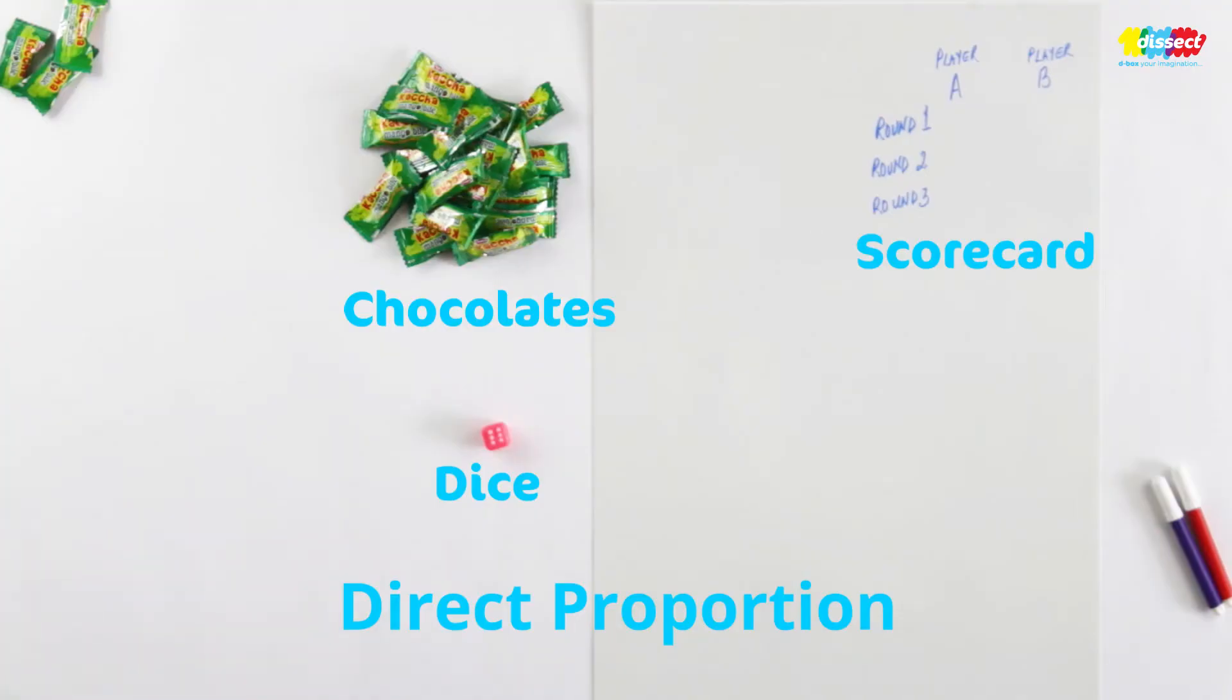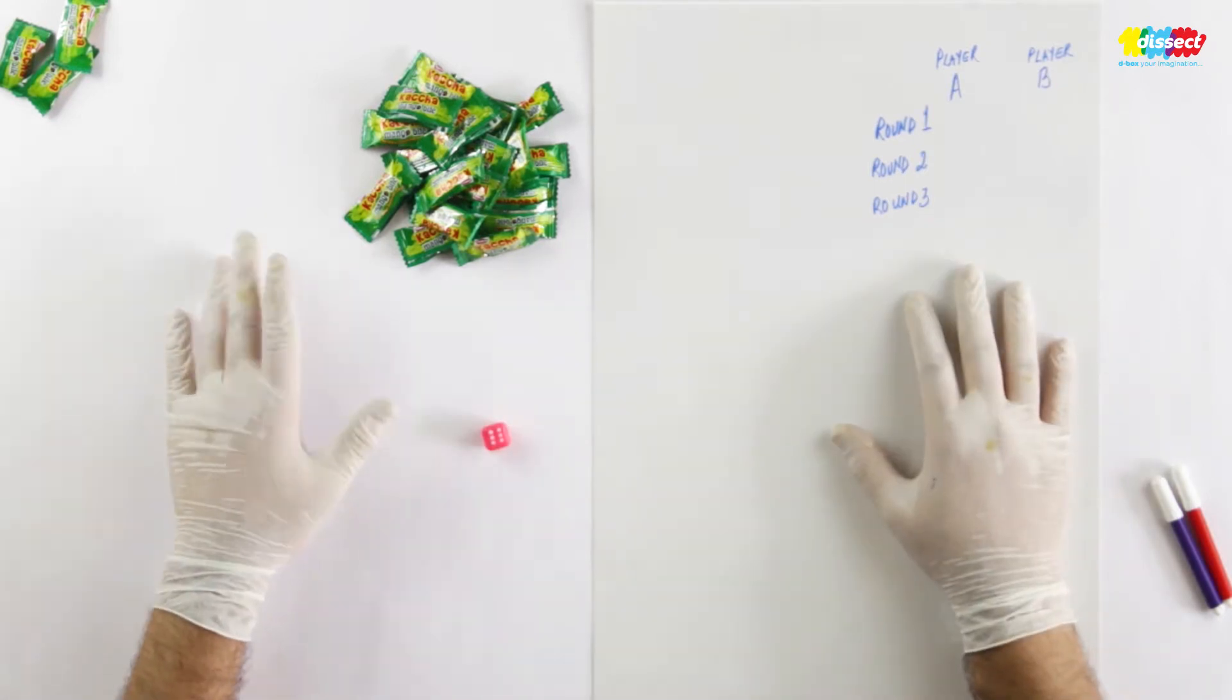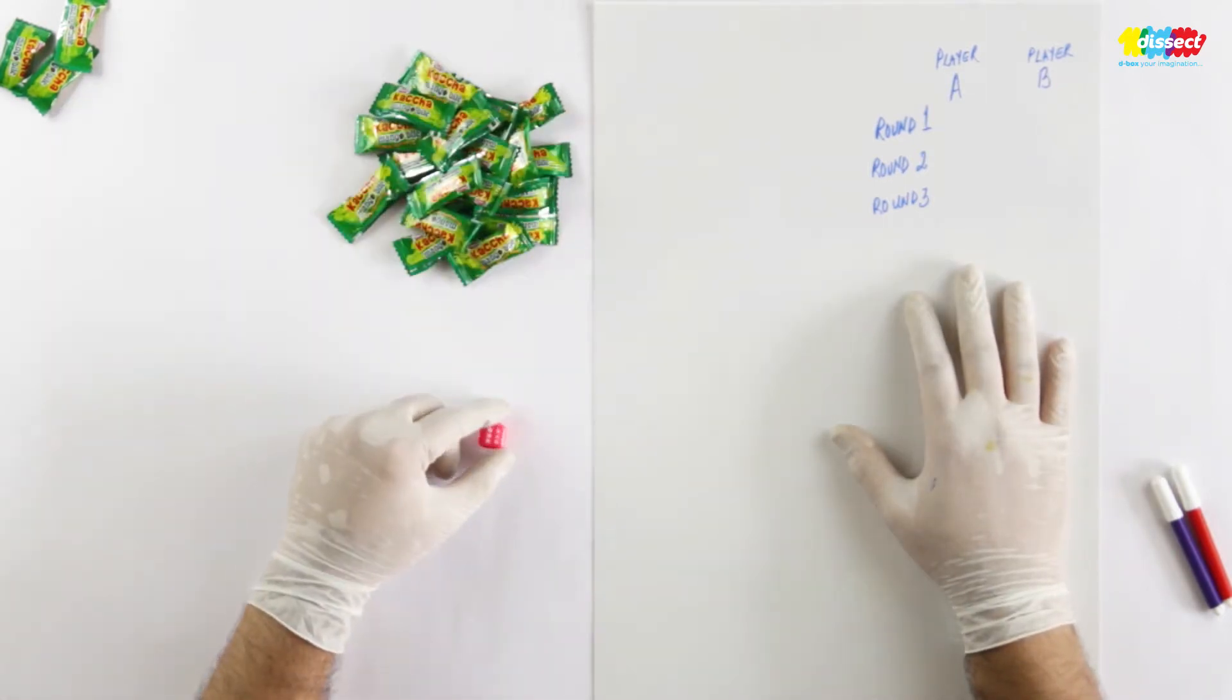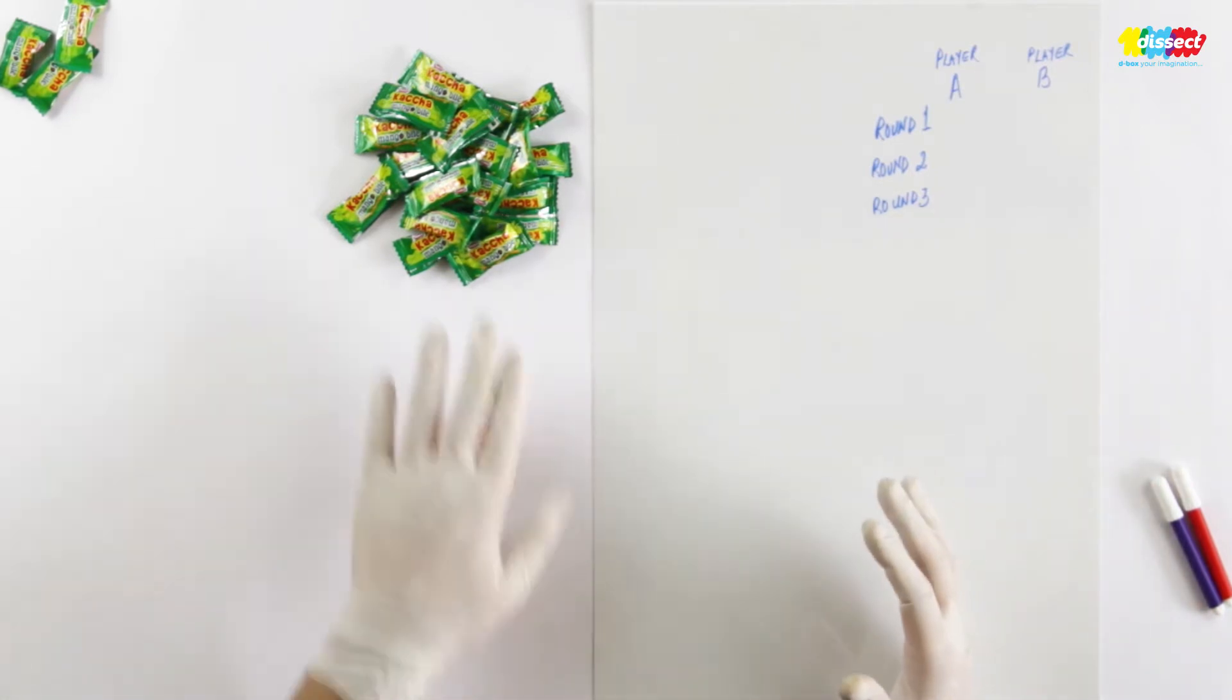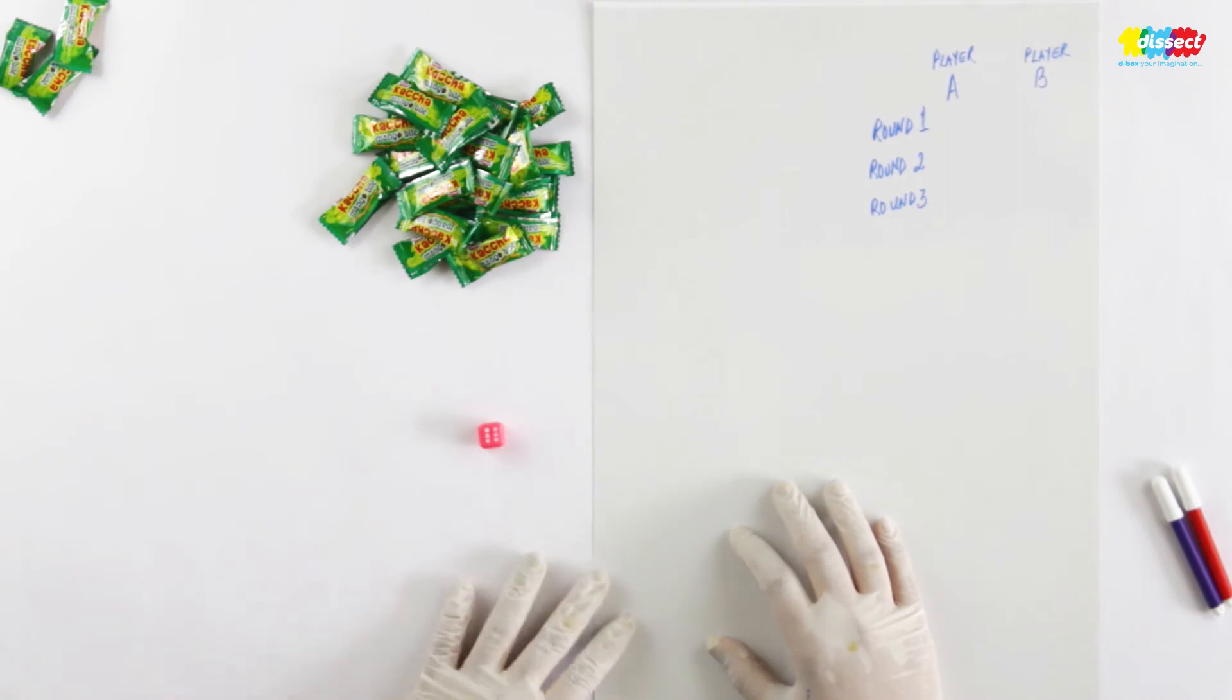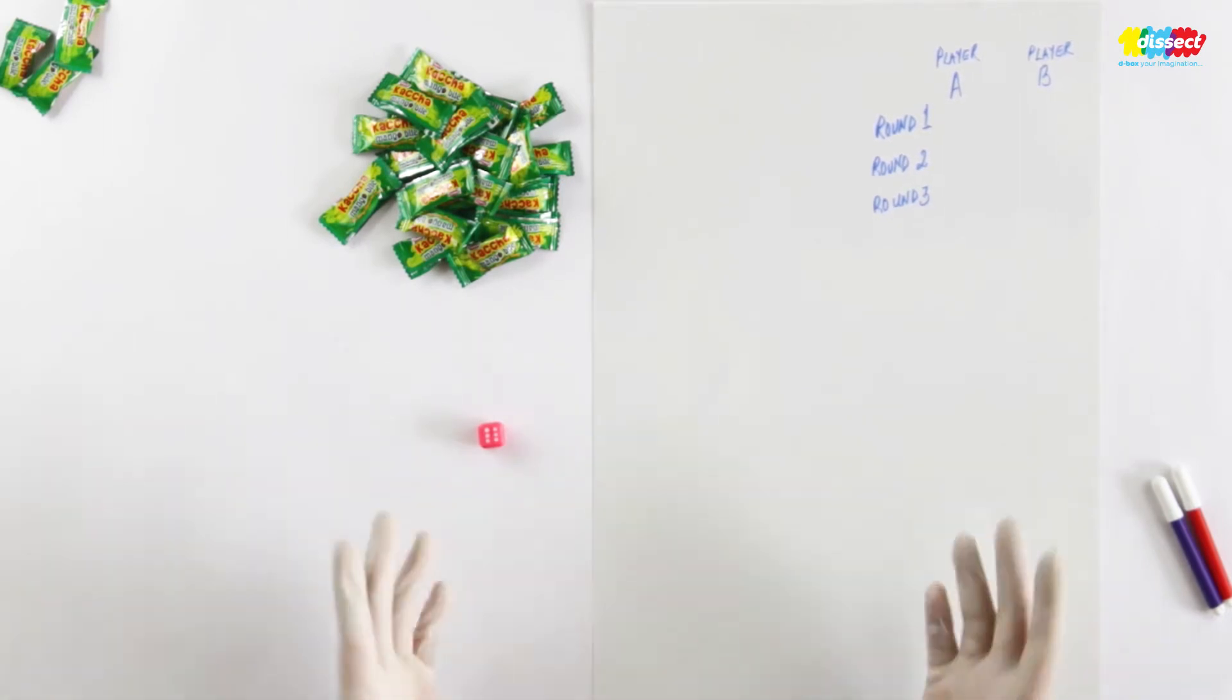Welcome to Maths Fun with Tixie. So here we have some chocolates and a dice and I have made a scorecard here. Now using just a dice and chocolates we are going to play a game where we will understand about proportion.